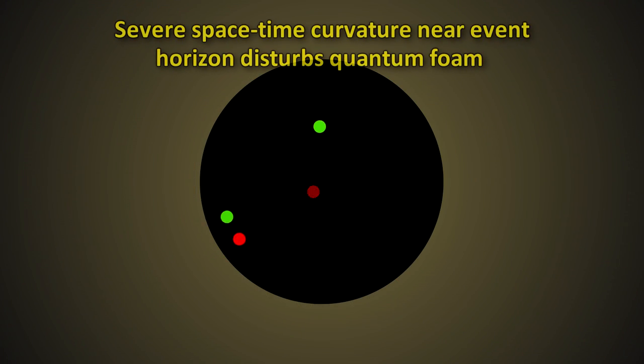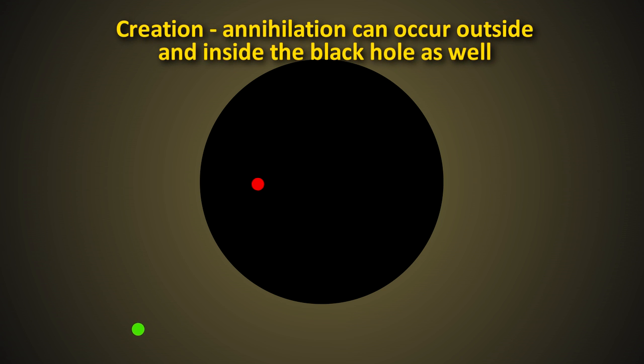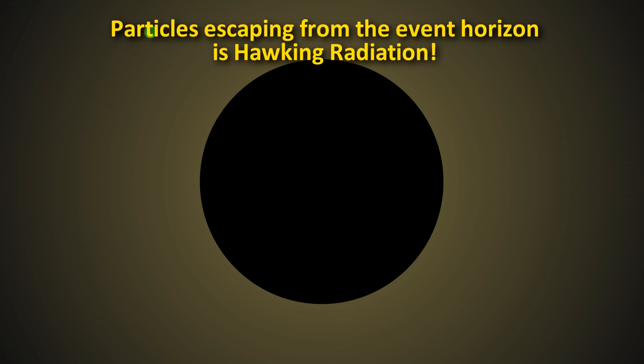The severe curvature of space-time near the event horizon of a black hole disturbs this quantum foam in ways that you don't see in normal empty space. As neutrinos and anti-neutrinos and electrons and positrons and other particle-antiparticle pairs get created, sometimes when two of these particles are close to the event horizon, one particle can get sucked into the black hole before the two particles have a chance to annihilate each other. This kind of capture and release by the black hole can happen anywhere in the space around the event horizon, outside it as well as inside it. If the partner is left outside, it will no longer have a partner with which to annihilate, so it will remain and escape from the black hole. This particle will be carrying energy with it. This is what we perceive as Hawking radiation outside the black hole.